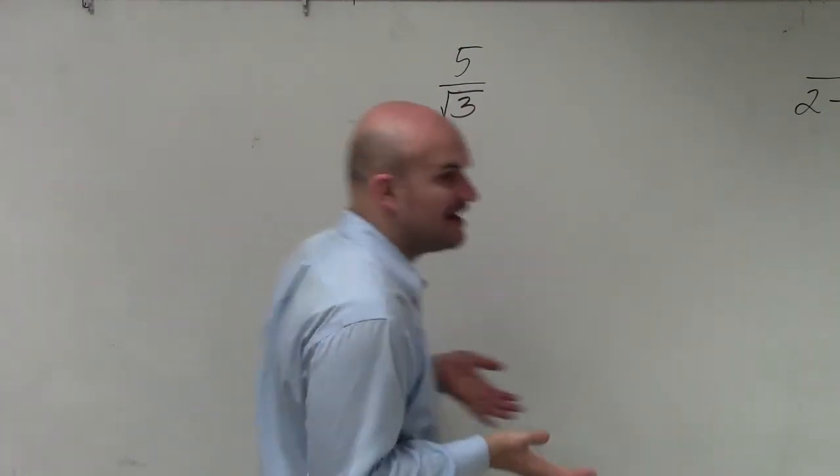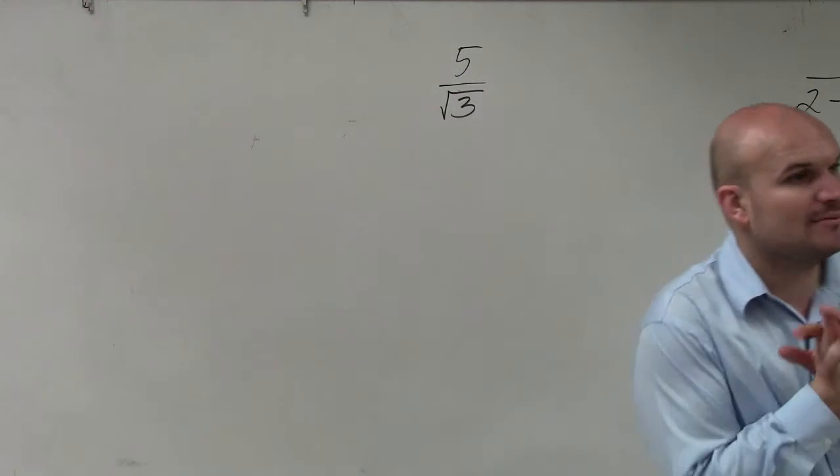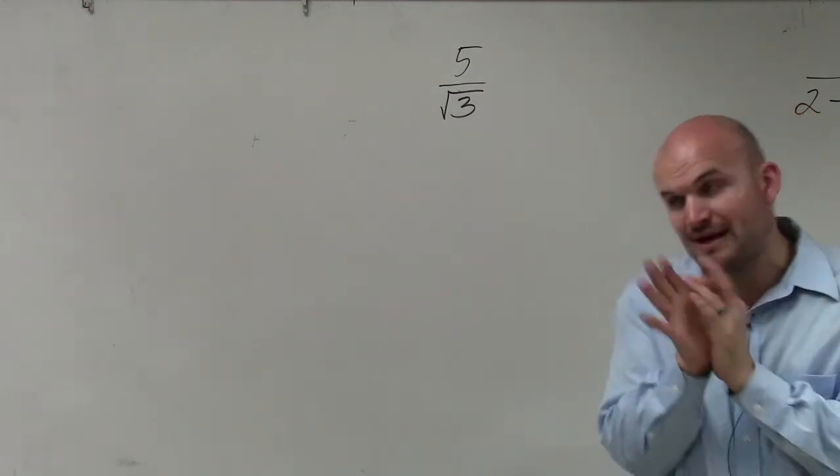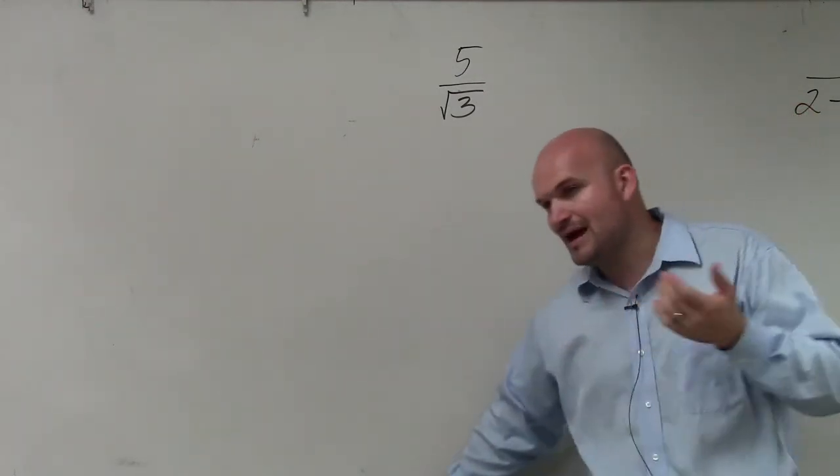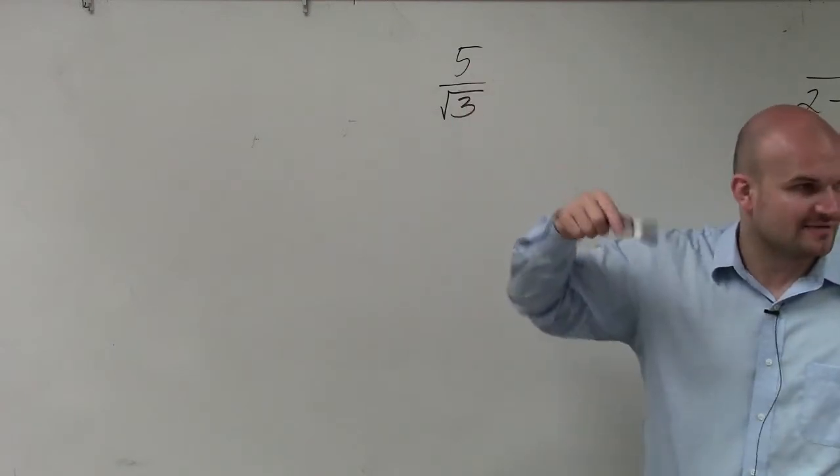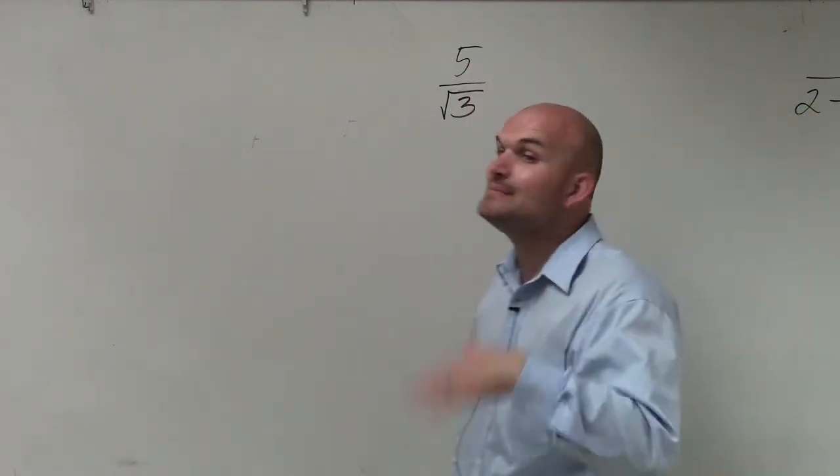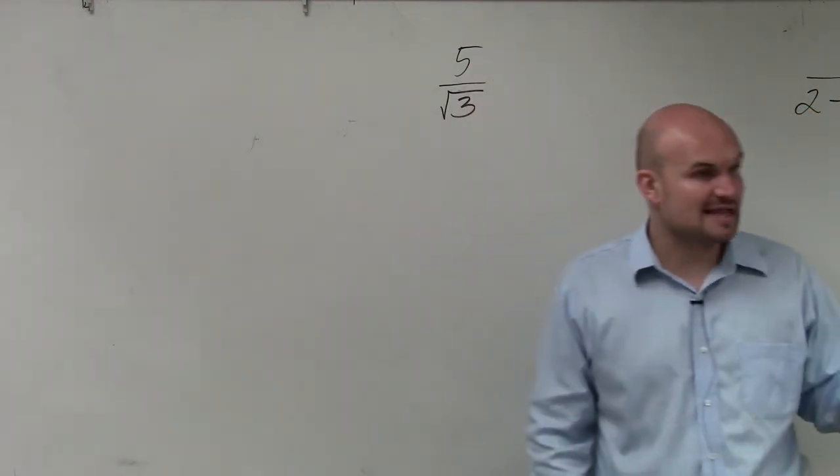But the main important thing, guys, when we're trying to simplify and we have a radical in the denominator, we obviously cannot divide the square root of 3 into 5. So the next thing we want to do is eliminate that square root in the denominator.